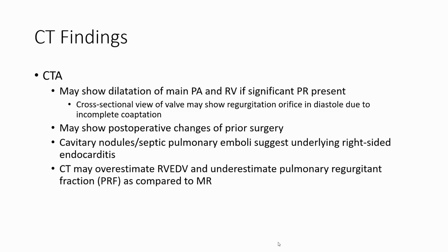CTA: moderate dilatation of the main pulmonary artery and right ventricle with significant pulmonary regurgitation present. Post-operative changes may be seen. There is no septic pulmonary embolism such as underlying right-sided endocarditis. CT may overestimate right ventricular and diastolic volume and underestimate pulmonary regurgitation as compared to MRI.